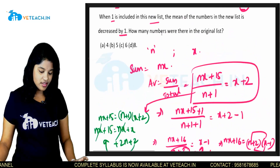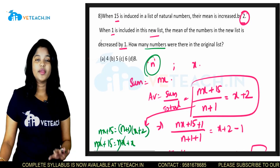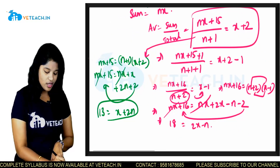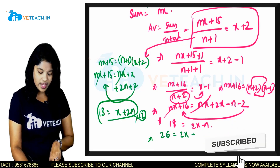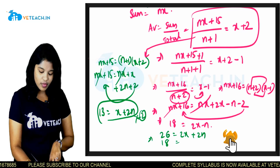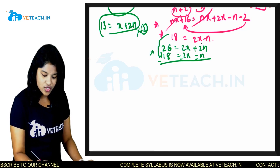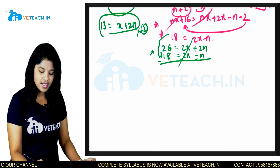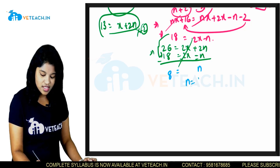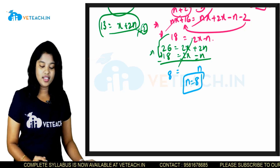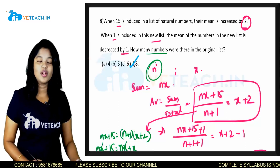We need to find n. Multiply equation 13 = x + 2n by 2: 26 = 2x + 2n. Write the second equation: 18 = 2x − n. Subtracting: 26 − 18 = 8 = 2n − (−n) ... working through: 2n + n gives 3n, wait — subtracting gives 2x − 2x = 0 and 2n − (−n) = 3n, so 8 = 3n... actually n = 8. Option D, n = 8 is our correct answer.